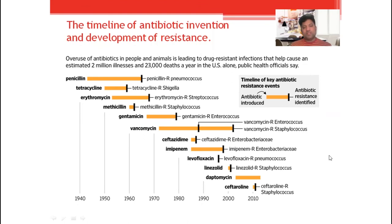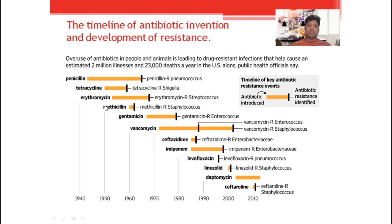Similarly, Vancomycin was discovered in 1972, and we observed two different resistant strains: Enterococcus, identified in 1985, and Staphylococcus, whose resistant strain was isolated around 2000. Staphylococcus resistance was also observed in Enterococcus and Enterobacteriaceae species. Imipenem was introduced around 1985-1987, and resistance was observed in 2005.